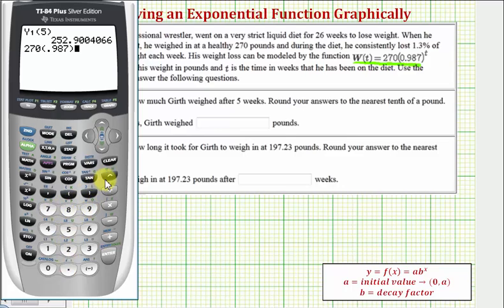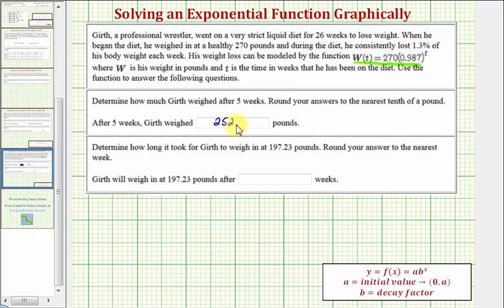Enter, and the result is the same. So to the nearest tenth, the weight would be 252.9 pounds. Again, we found that W(5) was approximately 252.9.